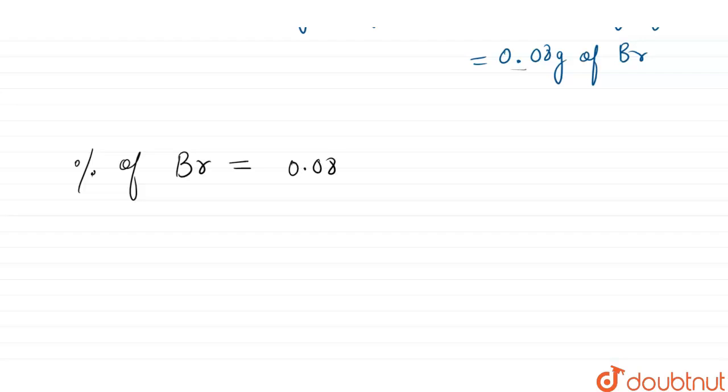0.08 divided by mass of organic compound which is given as 0.25 into 100. So this comes out as 32 percent, or you can say the amount of bromine that is present will be 0.32, right?